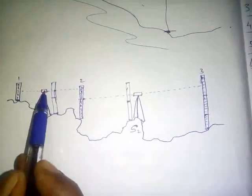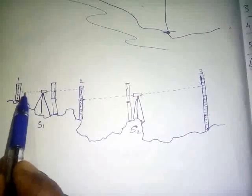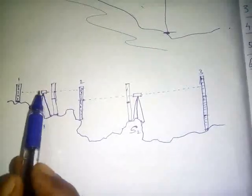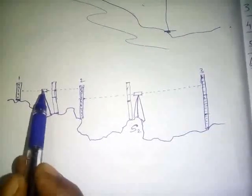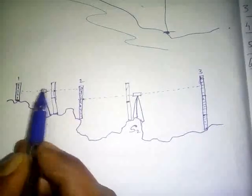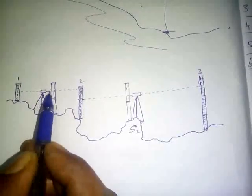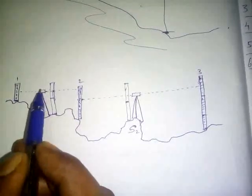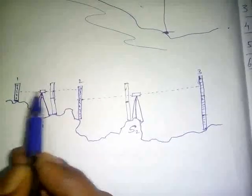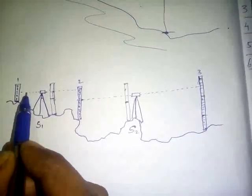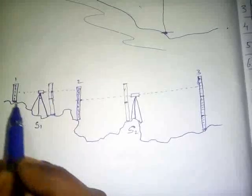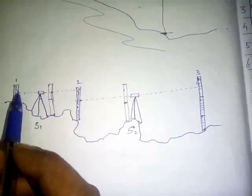The dumpy level is used to view. This gives a 360-degree horizontal rotation. The height is vertical. This instrument provides horizontal rotation, and this is a scale on the leveling staff.